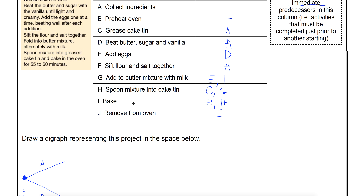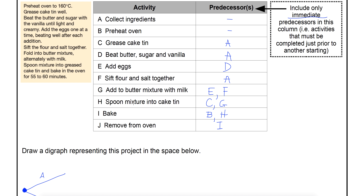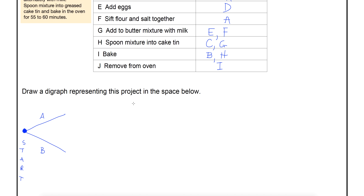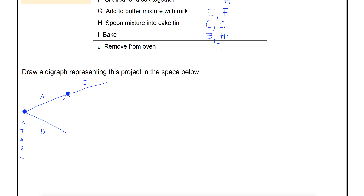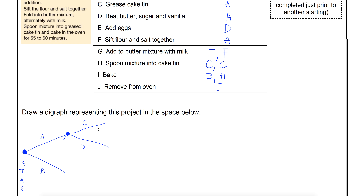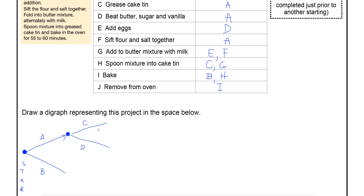I'm going to start working down the list. C needs A to be done. Where A finishes — at this vertex — C is going to come after that, so I need to put in C. D also requires A to be done, so I'll put D in. E requires D, so we finish D and E comes after it. You can tick them off as you go — that's helpful so you can see where you're up to.